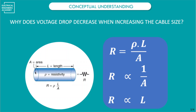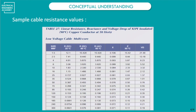Here we can see a sample datasheet from one cable manufacturer. You can clearly see that as the cross-sectional area of the cable increases, resistance decreases, and ultimately the voltage drop value of that cable decreases. This confirms that resistance is inversely proportional to the cable's cross-sectional area, and therefore so is the voltage drop.